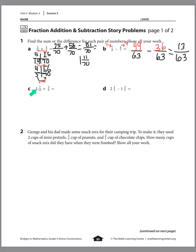Let's look at C: 1 and 7/15 plus 3/9. Again, we're thinking of the multiples of 15 and 9: 15, 30, 45. So our denominators are going to be 45. What are we multiplying 15 by to get to 45? We count by 15: 15, 30, 45 — so we're multiplying times 3. That means we multiply the top times 3: 7 times 3 is 21.